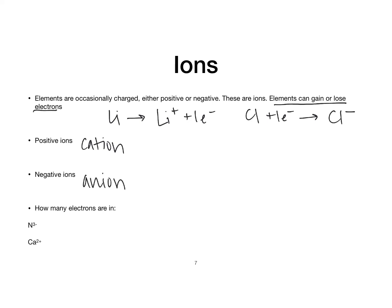There are a couple of ways to remember cation versus anion. A cation is positive — and right in the middle of the word 'cation' there is a T, which looks kind of like a plus sign. A negative ion has an N in the middle for negative, and 'anion' kind of sounds like 'a negative ion' mushed together.